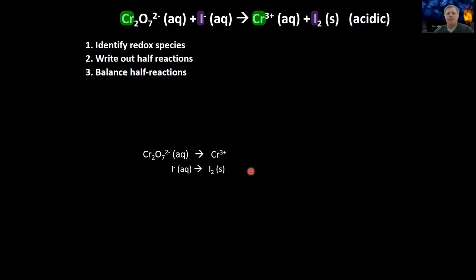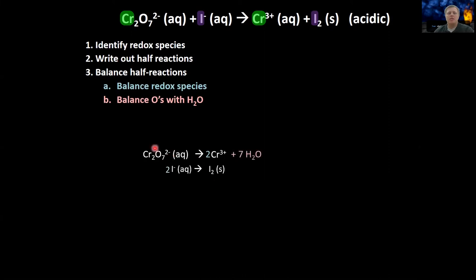Now I have chromate and Cr3+ in one half reaction and I-minus and I2 in the other. Then we balance these half reactions. First, balance the redox species — I put a 2 in front of chromate because there are two chromiums on the left so there need to be two on the right, and a 2 in front of I-minus to balance I2. The next step is to balance oxygens with water. There are only oxygens in the top reaction — seven of them — so we need to add seven water molecules on the right.